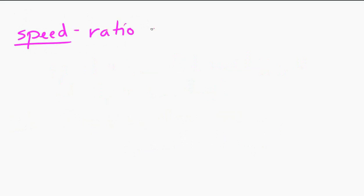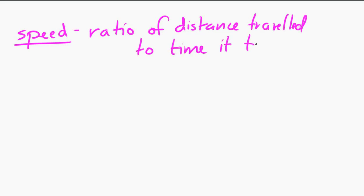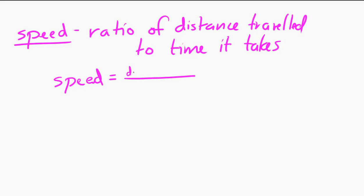Speed in physics is the ratio of the distance traveled to the time that it takes. And if you think about that definition, you can come up with an equation that you might have seen. Speed is a ratio — a ratio is just division, or it can be expressed as division. And if it's the ratio of distance traveled to time that it takes, then it's the distance traveled divided by the time. That's where this equation comes from: speed is distance over time.